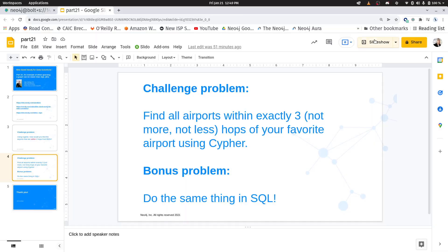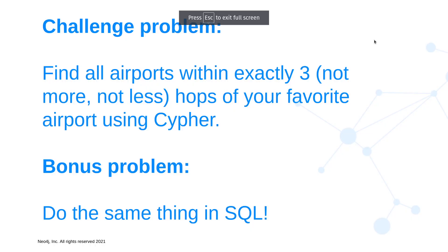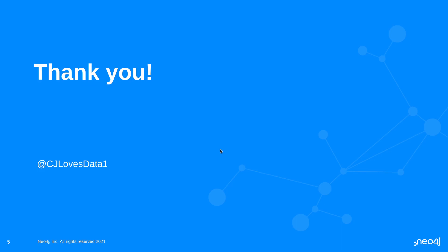Here's this week's homework assignment. First, find all airports that are within exactly three hops — not more, not less — of your favorite airport using Cypher. And if you really want a bonus problem, try doing that in SQL. Thank you for tuning in. Please reach out to me on Twitter if you have things you'd like to see in future episodes, and we'll see you next week.